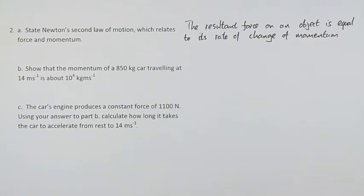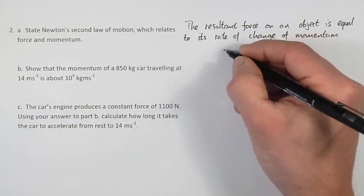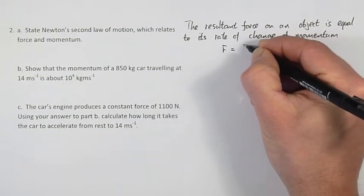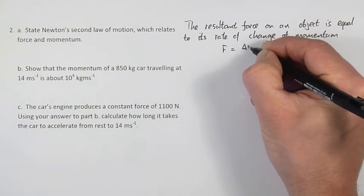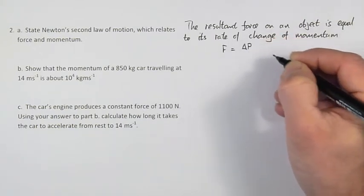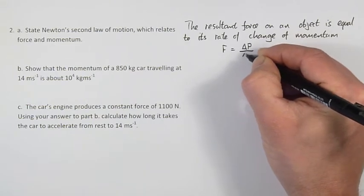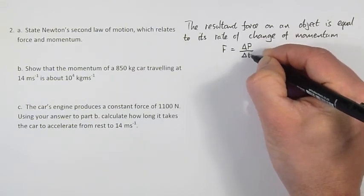Now we can also write that in symbols where the force F is equal to the rate of change, the change being shown by delta, rate of change of momentum, so change of momentum over time.